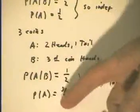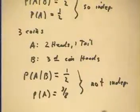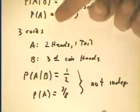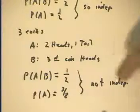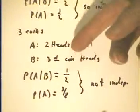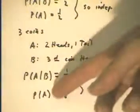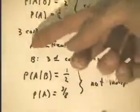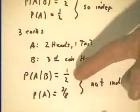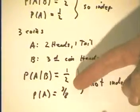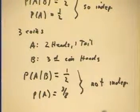Now, what's the probability of A alone — getting two heads and one tail? The sample space for three coin flips has eight outcomes. Only three of those outcomes — HHT, HTH, and THH — satisfy the condition for A, so the probability of A is three out of eight. Since probability of A given B (one half) is not the same as probability of A (three eighths), the events are not independent.